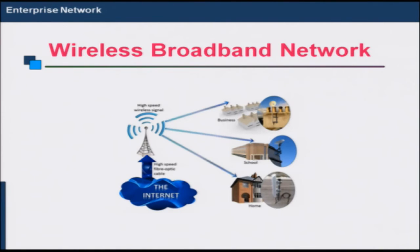In wireless broadband, we use 2G, 3G, or 4G wireless networks to provide data connectivity. You can have a 2G, 3G, or 4G dongle connected to your laptop or desktop, or in the case of mobile phones, this is built in. The advantage of this kind of connectivity is that it can provide seamless internet connectivity on mobile phones even when you are traveling.